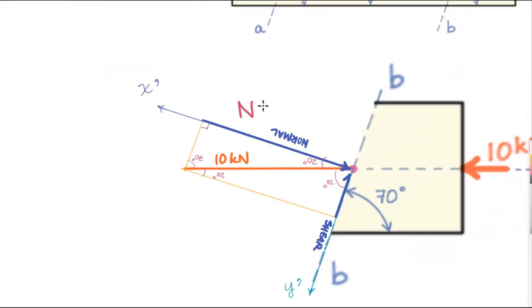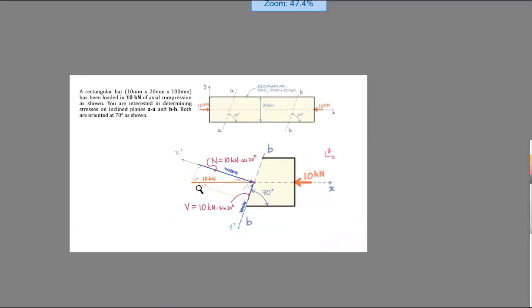So my normal vector n is equal to 10 kilonewtons cosine of 20 degrees. Same we got on the other side. Hopefully that makes sense to you. And my shear force V is equal to 10 kilonewtons times sine of 20 degrees.